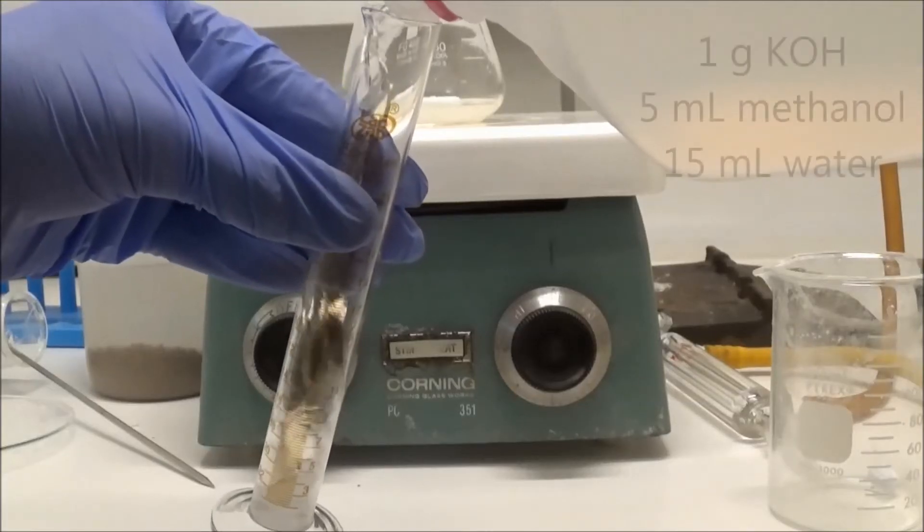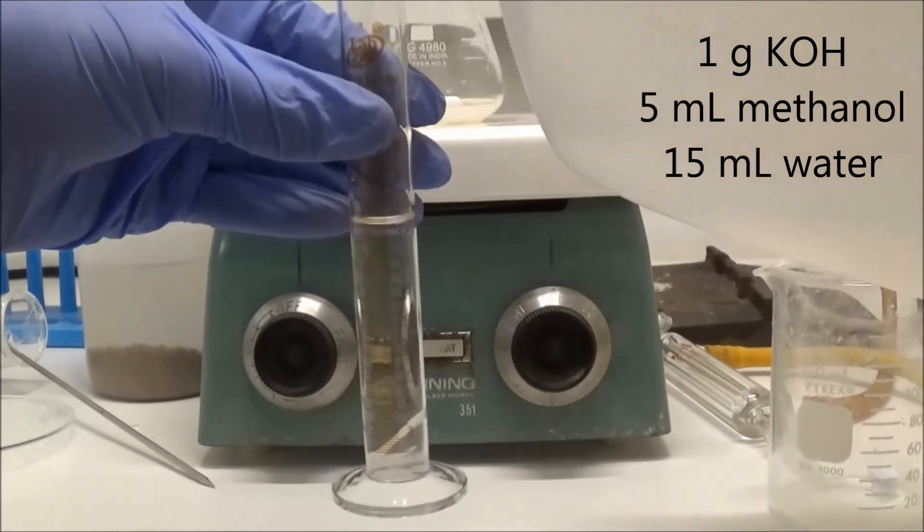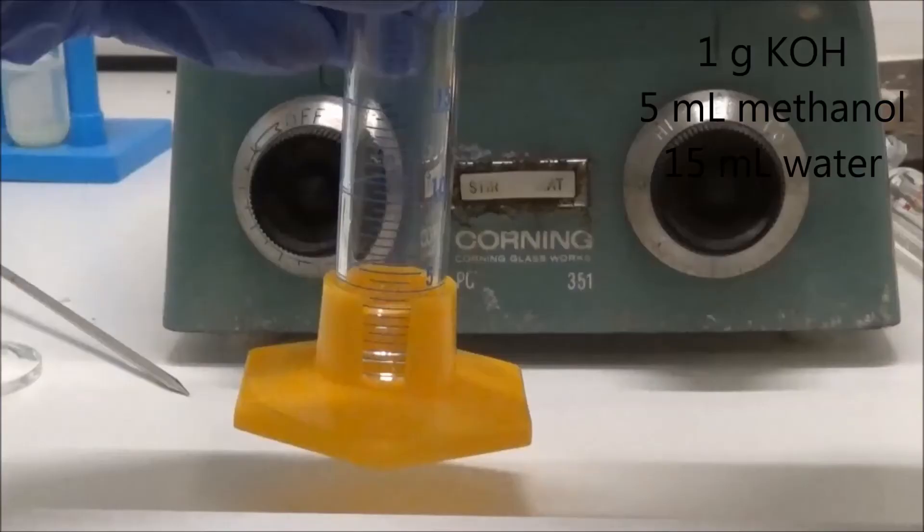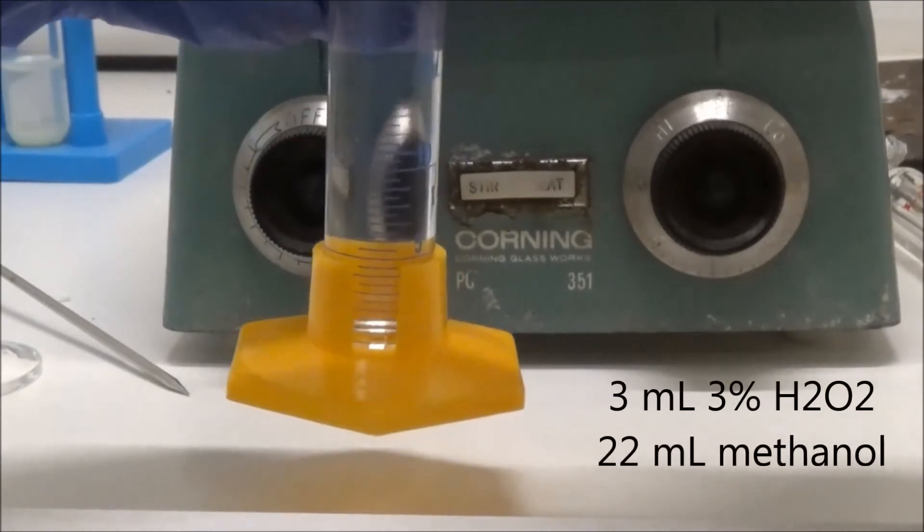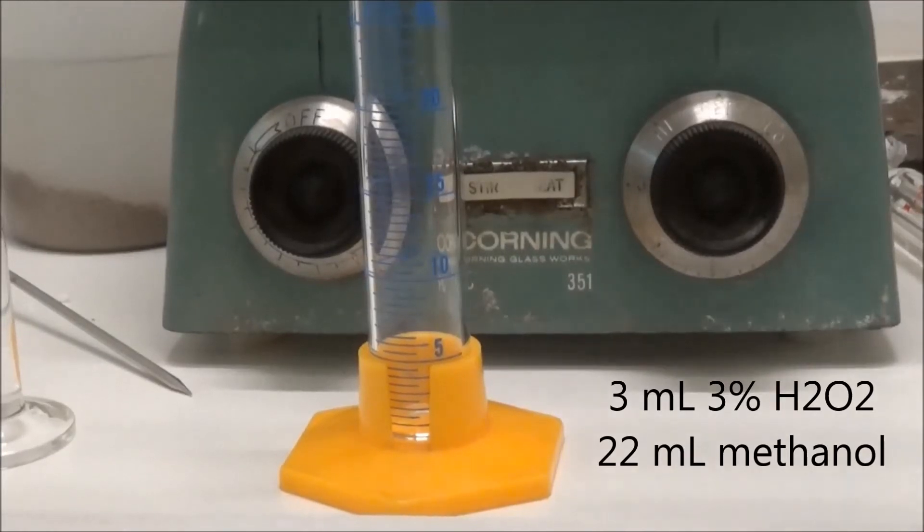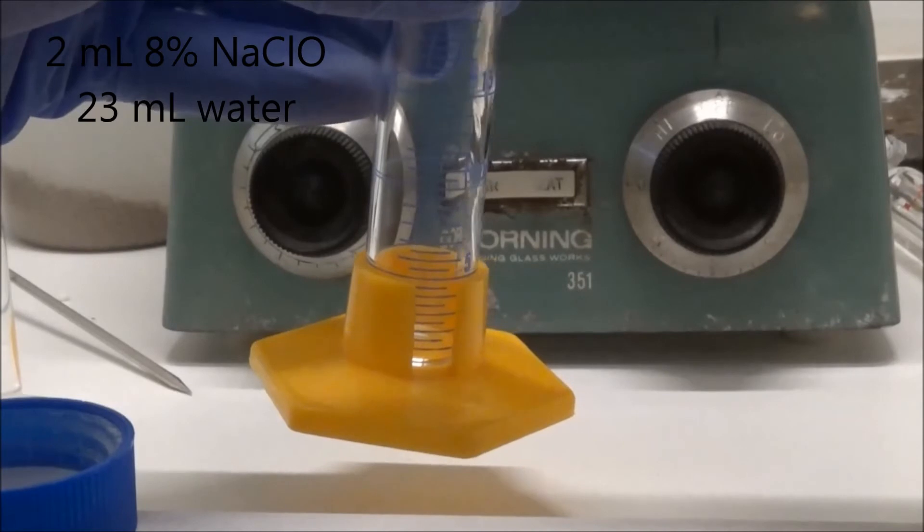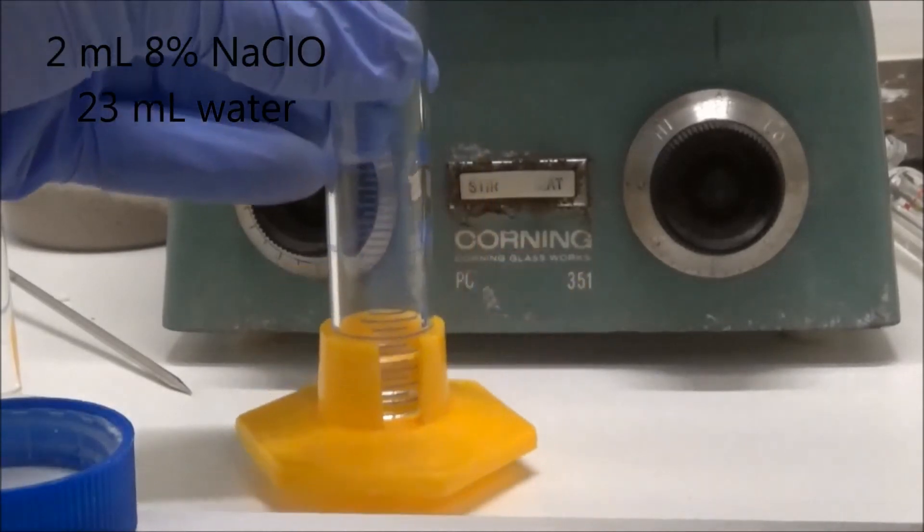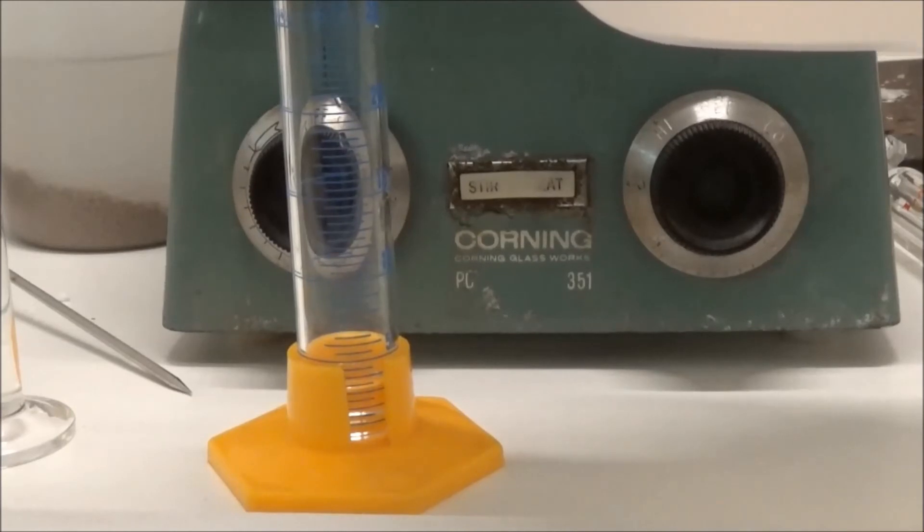I first made solution B with 1 gram potassium hydroxide, 5 milliliters methanol, and 15 milliliters of water. Solution A was 3 milliliters of 3% hydrogen peroxide and topped up to 25 milliliters with water. Solution C was 2 milliliters of 8% sodium hypochlorite solution and topped up to 25 milliliters like the last one.